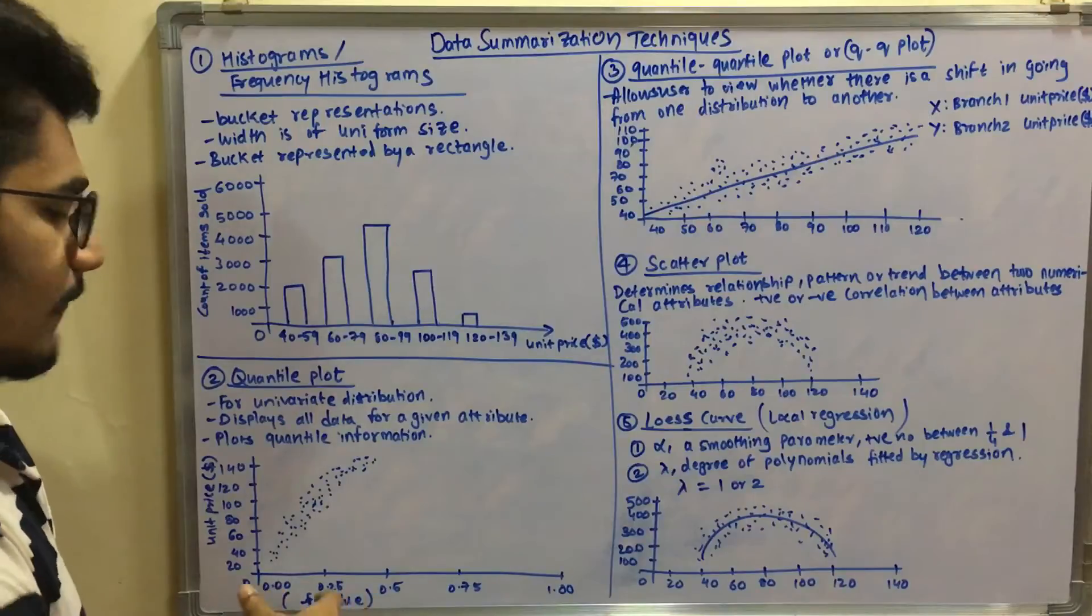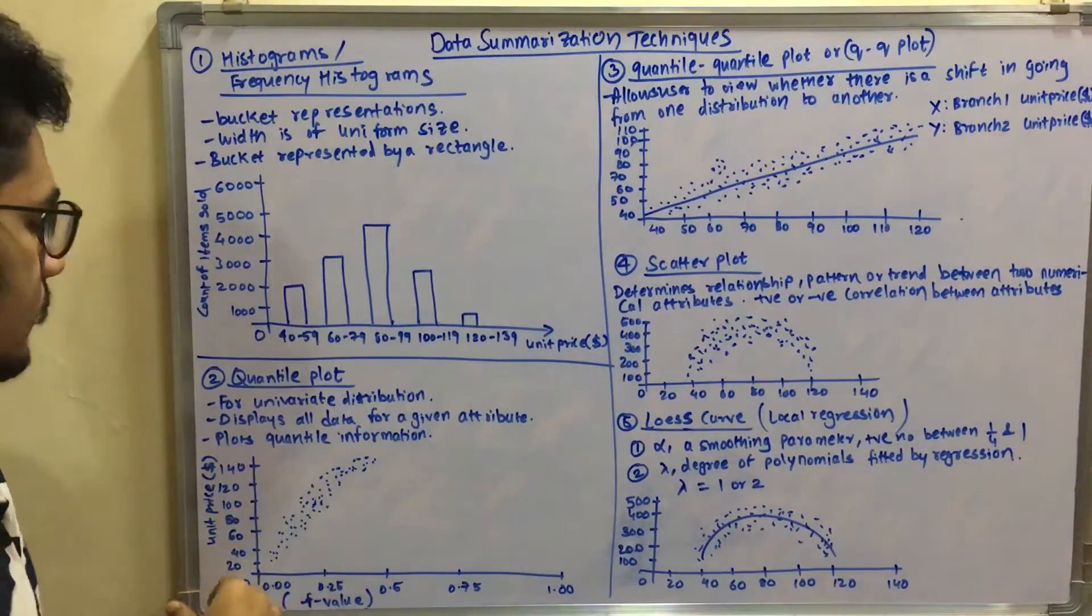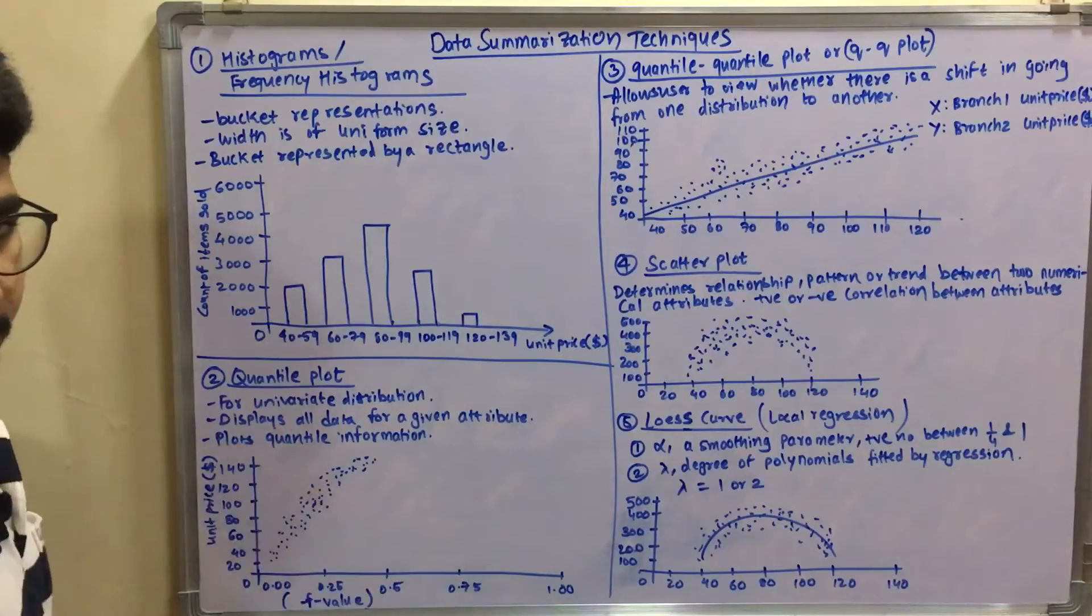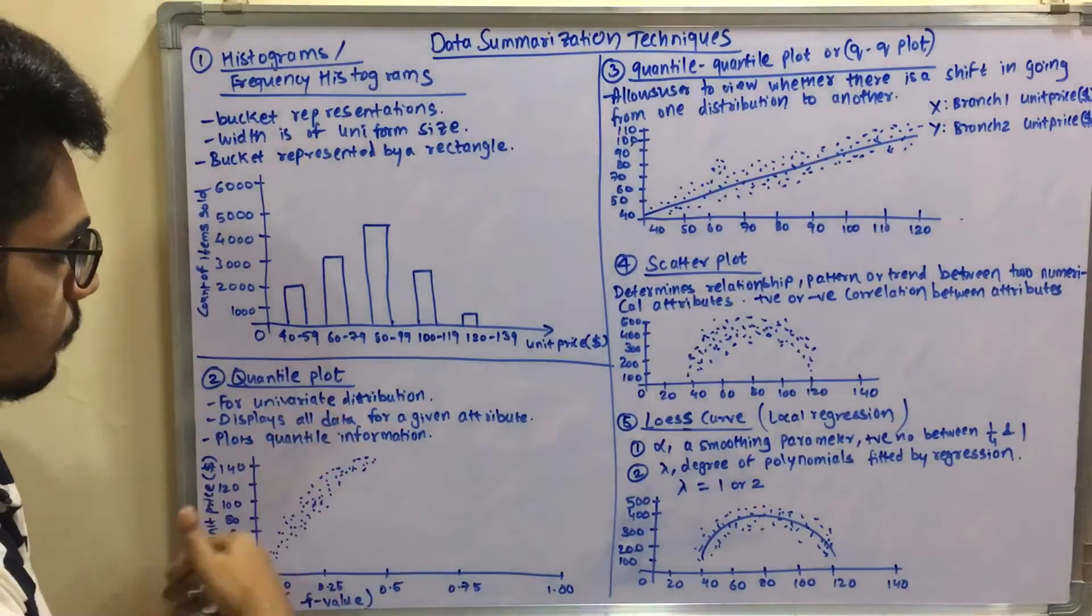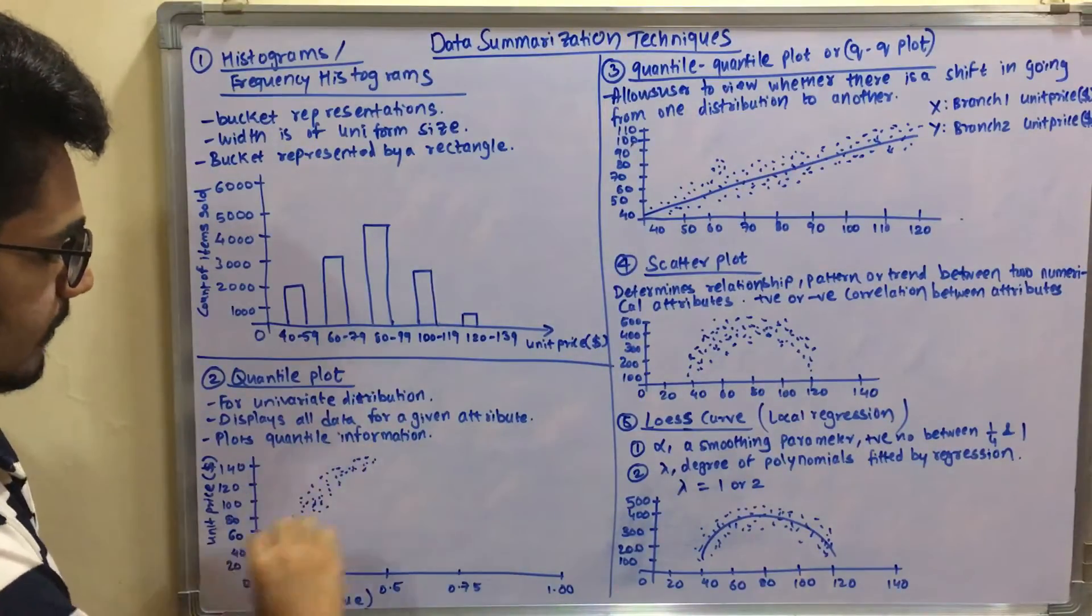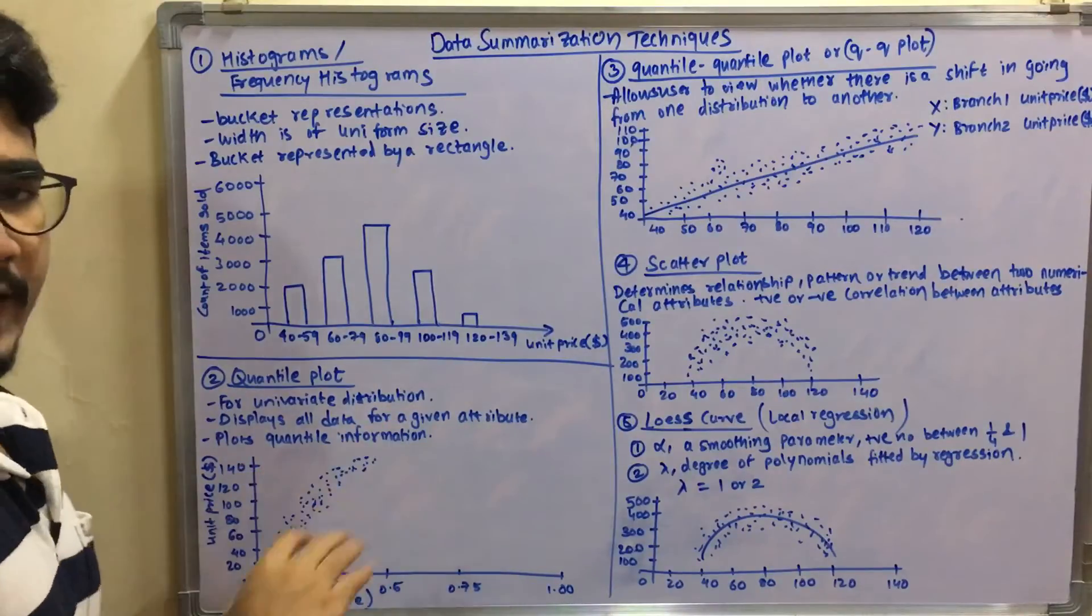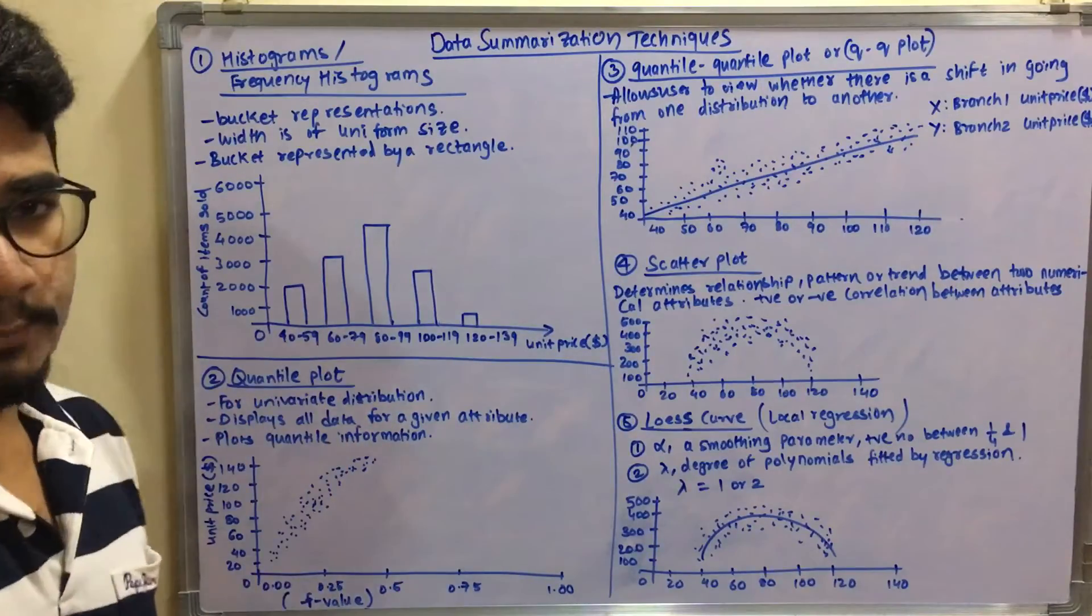So basically here we have some F values, frequency values, and we have some unit prices in dollars in X as well as Y axis respectively. And so we can have these data points which are scattered in this manner. It's like a particular trend is an exponential growth. So this can be plotted with the help of a quantile plot.